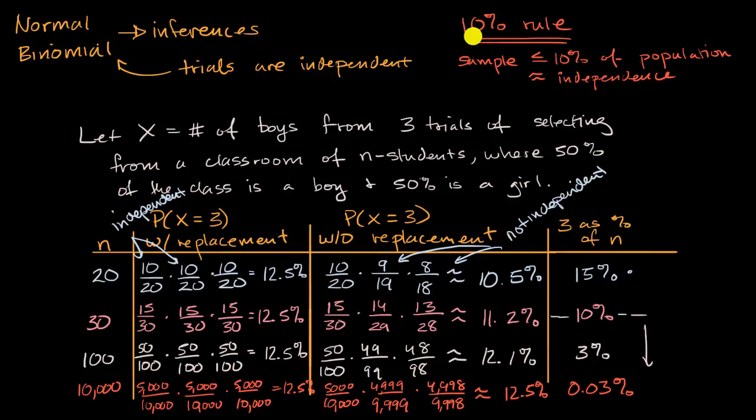With that said, the lower the percentage the sample is of the population, the better. Now to be clear, that's not saying that small sample sizes are better than large sample sizes. In statistics, large sample sizes tend to be a lot better than small sample sizes. But if you want to make this independence assumption, so to speak, even when it's not exactly true, you want your sample to be a small percentage of the population.